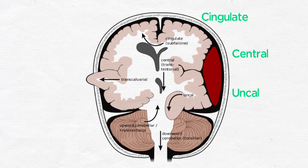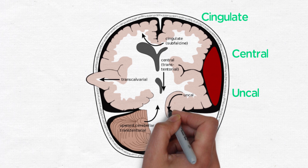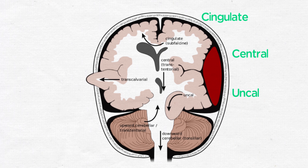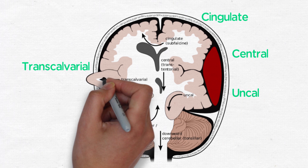Uncal herniation occurs when the medial temporal lobes move towards the tentorium and often compress the midbrain. Transcalvarial herniation will only occur when there is a defect in the skull, and the brain is pushed through this defect.